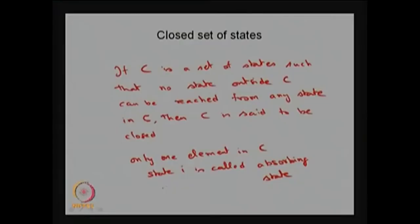A state i is said to be an absorbing state if it forms a closed communicating class which has only one element. There is also a possibility of more than one element in the closed communicating class. We can also define the absorbing state using the definition P(i,i) in one step equal to 1. That means the diagonal element of the corresponding row in the one-step transition probability matrix is going to be 1.